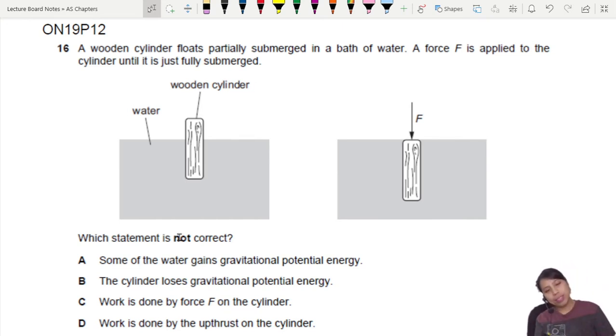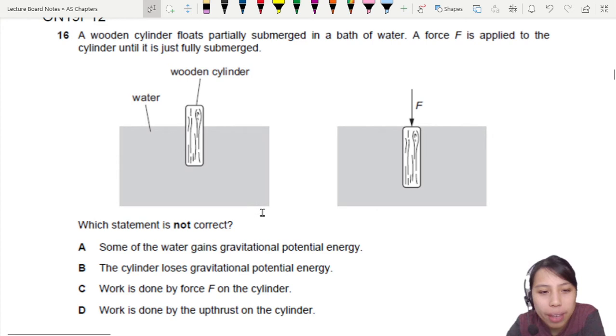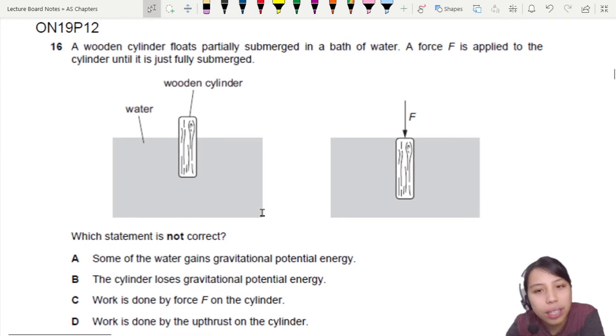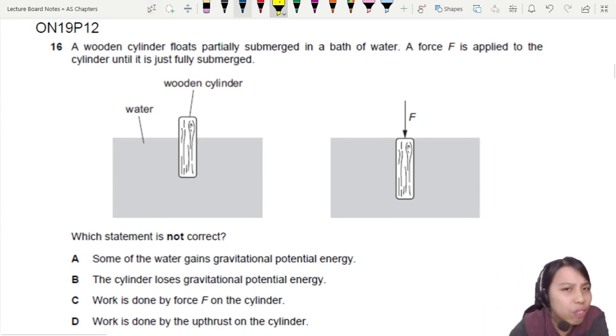When we look through the statements, let's go through case by case. Statement A says some of the water gains GPE. How do we know? I'm not very sure if it's correct or wrong. Let's put a question mark and hold on this one.